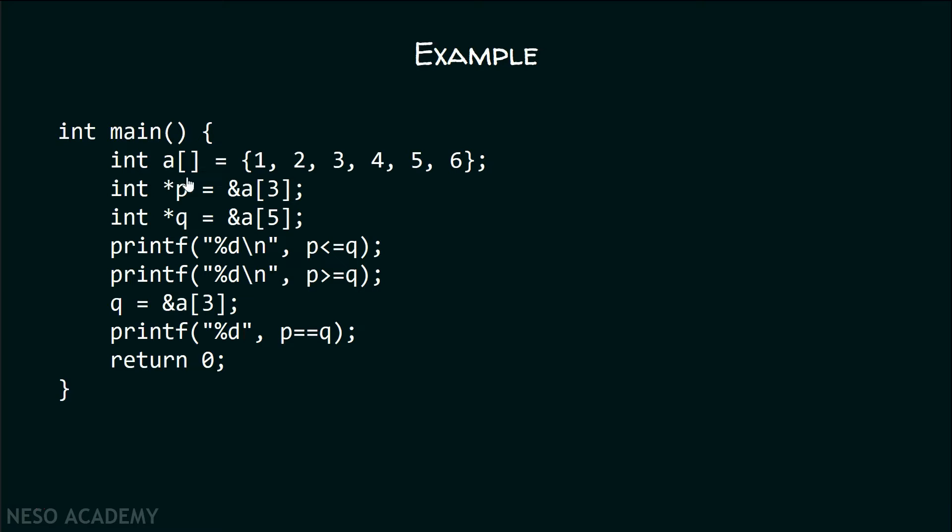Suppose we have an array A which consists of six elements, and we have a pointer P pointing to the fourth element of this array, and pointer Q pointing to the sixth element. This means that pointer P contains the address of the fourth element and pointer Q contains the address of the sixth element.